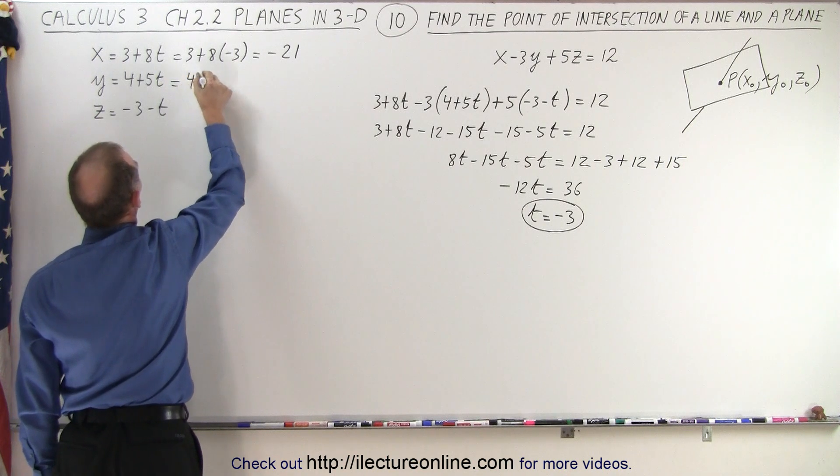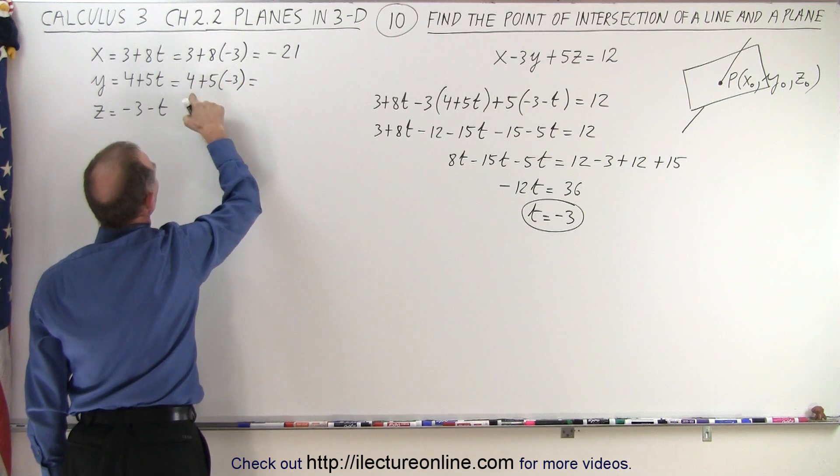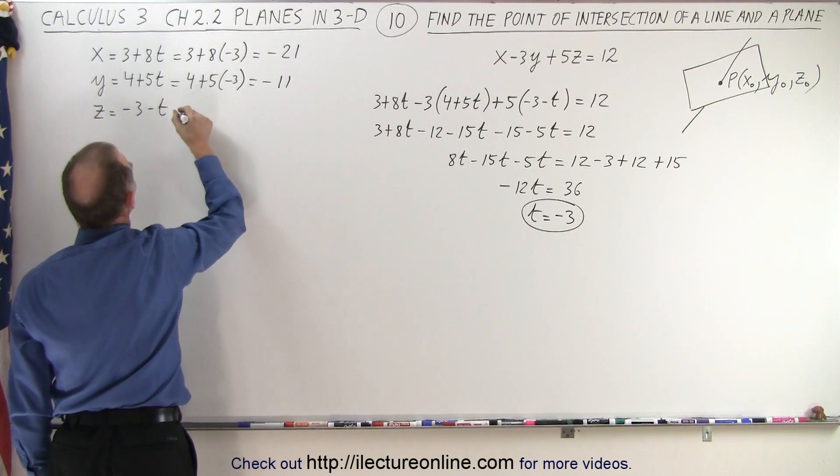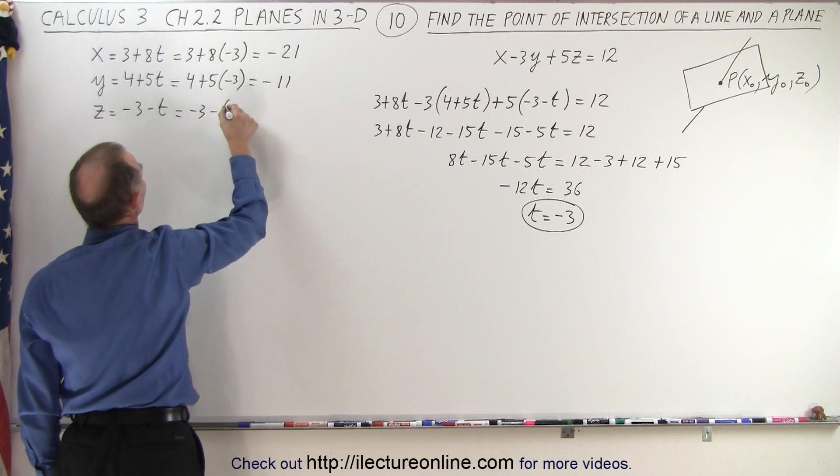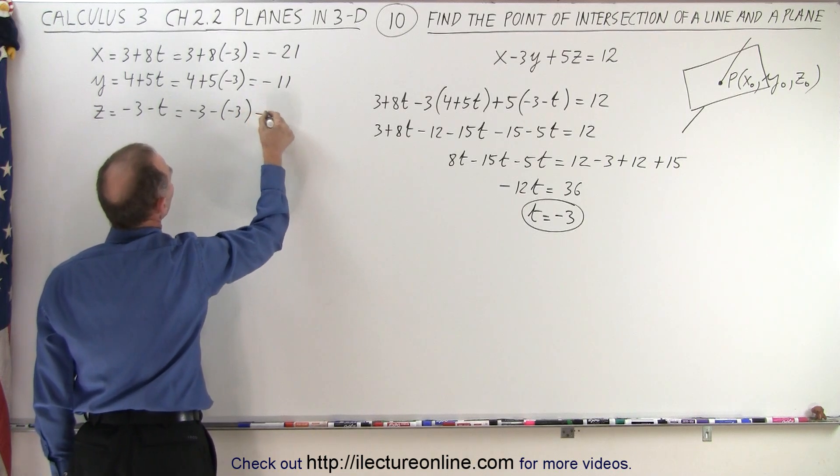Y becomes 4 plus 5 times the negative 3, so that's negative 15 plus 4, which is negative 11. And z becomes minus 3 minus minus 3, so that would be plus 3, that's equal to 0.